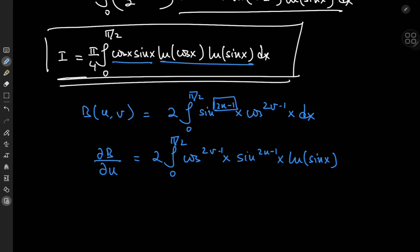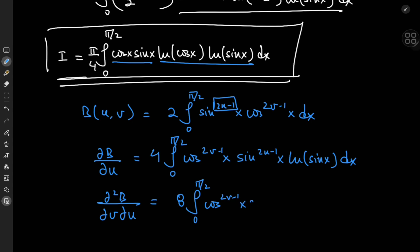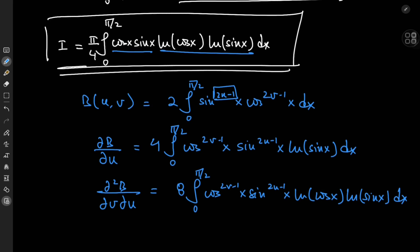Differentiating with respect to u using differentiation under the integral sign, the cosine term is a constant in the u realm, and differentiating the sine term gives the repeated function times the logarithm of sine x. By the chain rule, differentiating 2u - 1 gives an extra factor of 2, so there's a factor of 4 outside. For the logarithm of cosine x, we differentiate again with respect to v. So this mixed partial derivative of the beta function is 8 times the integral from 0 to pi/2 of cosine^(2v-1)(x) times sine^(2u-1)(x) times log(cos x) times log(sin x) dx. We need sine and cosine to the first power, so 2v - 1 = 1 implies v = 1, and similarly u = 1.